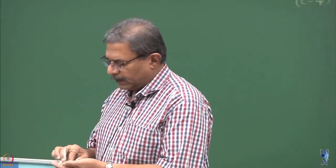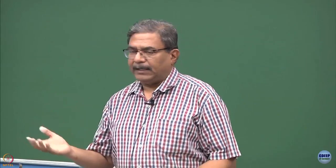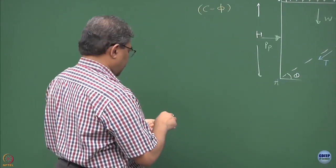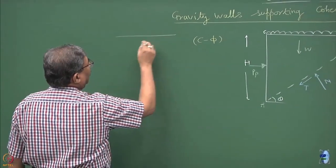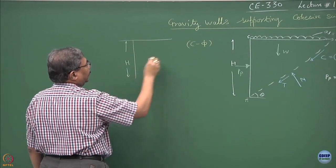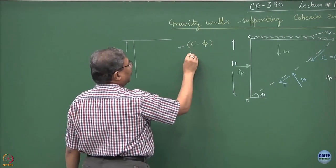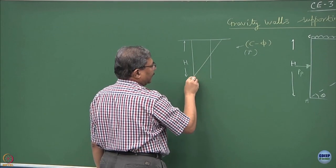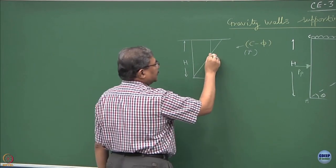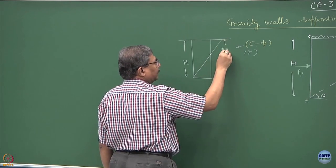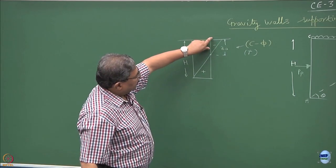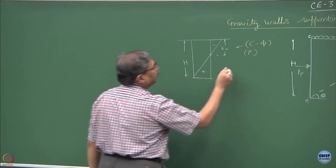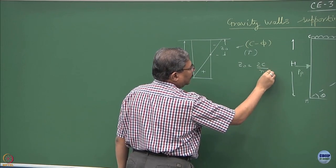Now let me introduce the concept of tension crack in a c-phi soil which you have studied already. We had talked about the soil mass of height h, and if this happens to be a c-phi type of a soil with unit weight of gamma, what we did? We drew the pressure diagram and this is how the pressure diagram look like and this is the z0, the depth of tension crack.